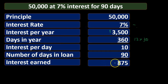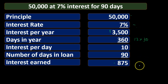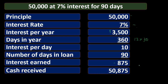Then we take that number times 90 days, and that gives us $875. So the $875 is how much interest we would earn for the 90-day period at 7% simple interest. If we take the original loan amount of $50,000 and add the $875, we get $50,875 that we would receive at the end of the loan term. This is one of the ways I find easiest to see — breaking it out by days.